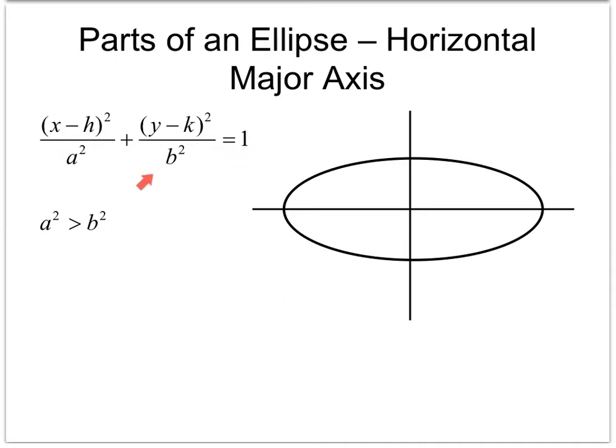These two numbers at the bottom are going to cause the change in the radius. So this a squared and b squared at the bottom is what's causing the change, and these two are what are going to make it different than a circle.